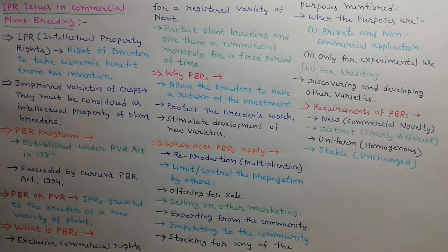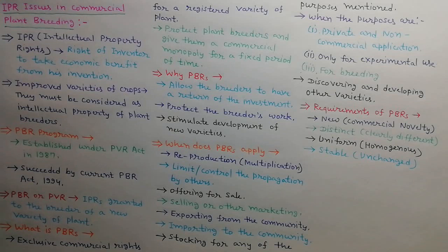To get plant breeder rights, the variety should be new or with commercial novelty. It should be distinct, meaning clearly different from other varieties. It should be uniform, meaning homogenous. And it should be stable, meaning it remains unchanged during reproduction.